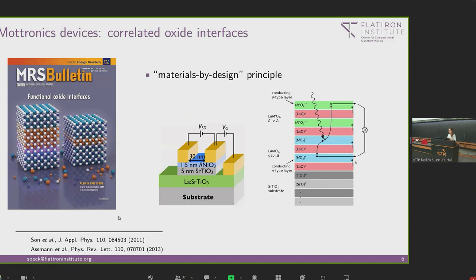Due to tremendous progress in thin film growth techniques, experimentalists can now grow these materials atom by atom, exfoliate them, and grow them in atomic layers. This gives rise to a materials-by-design principle where we engineer materials for electronic applications. Here's an example of a prototype Mott transistor based on thin films of rare-earth nickelates, and a prototype Mott solar cell based on the Mott insulator lanthanum vanadate, which would have higher energy efficiency than current semiconductor solar cells.